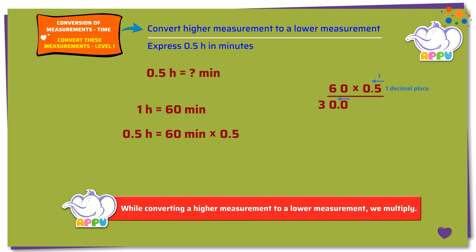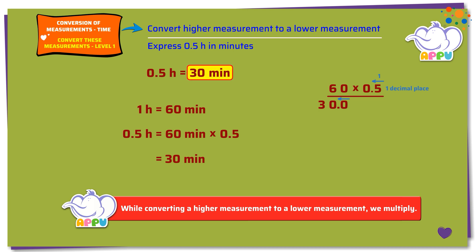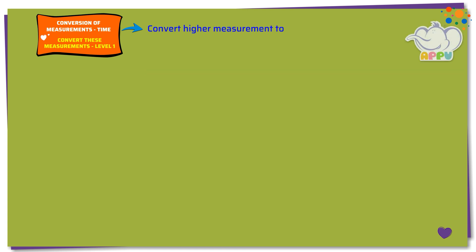That is, 60 minutes times 0.5 equals 30 minutes. So, 0.5 hours equals 30 minutes. Amazing! Express 2.5 hours in minutes.